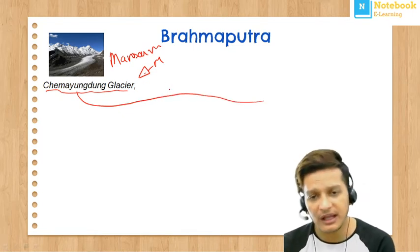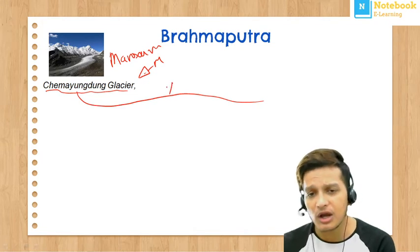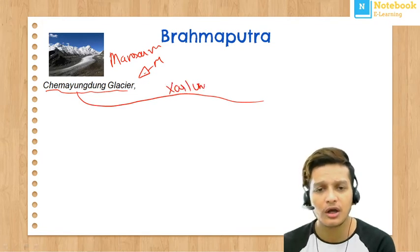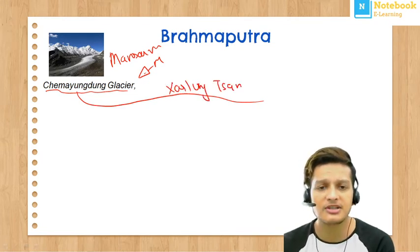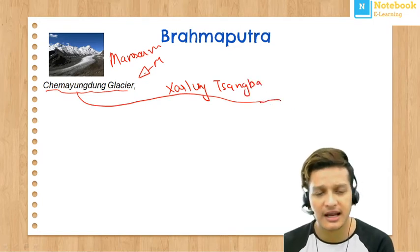In Tibet, this river is known by the name Yarlung Tsangpo. So Yarlung Tsangpo is the name of the Brahmaputra river as it flows through Tibet.